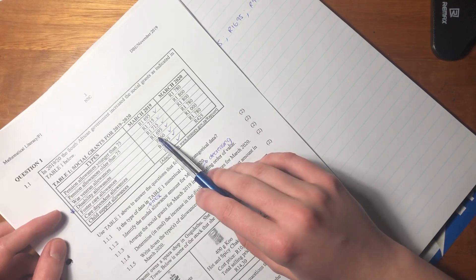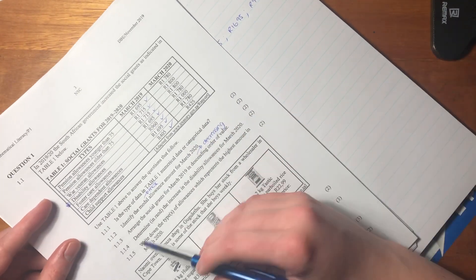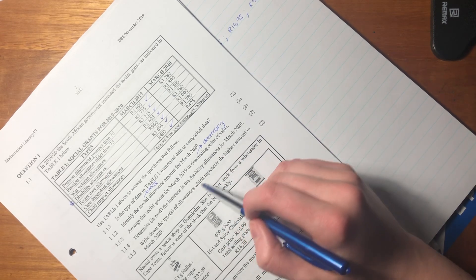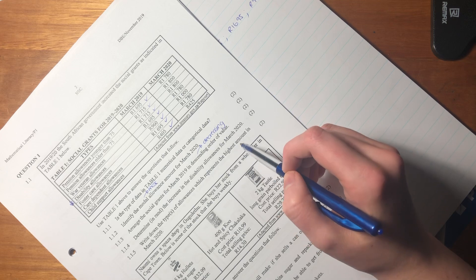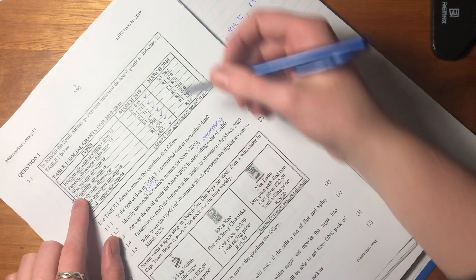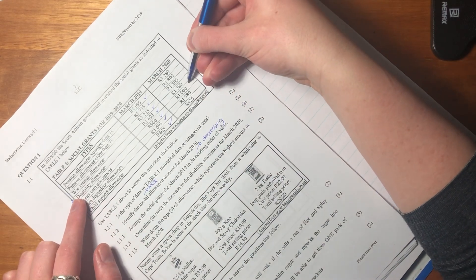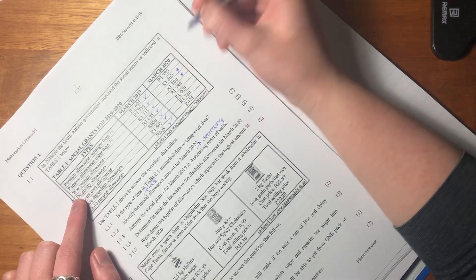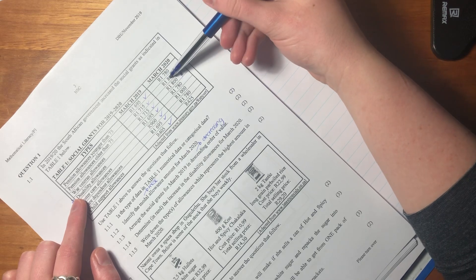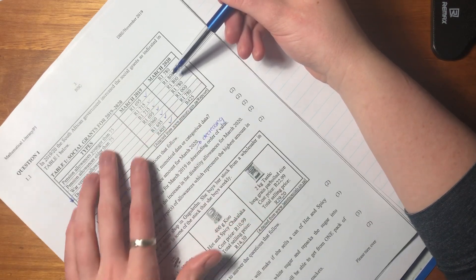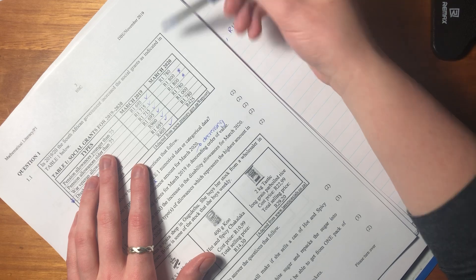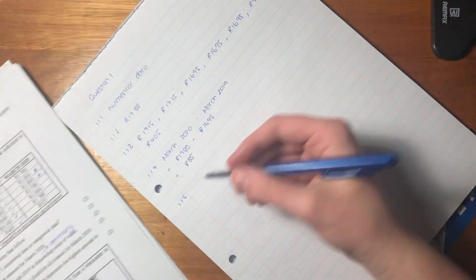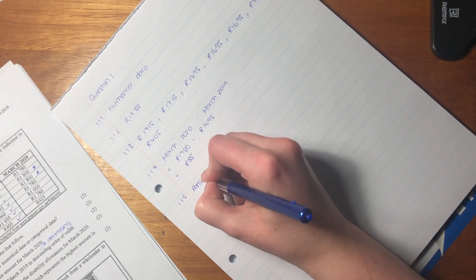Then it says write down the types of allowances which represent the highest amount in March 2020. In March 2020 the highest amount if I run my eyes down here are these two amounts: 1800 and 1800. If I look across you see pension allowances older than 75 and war veteran allowances.